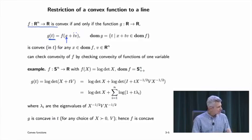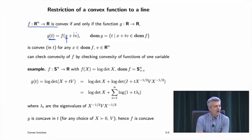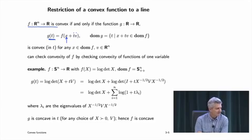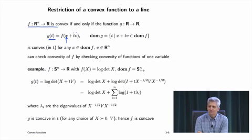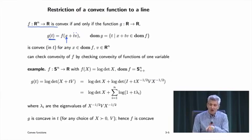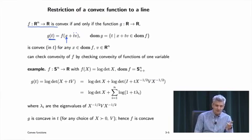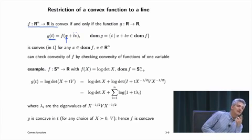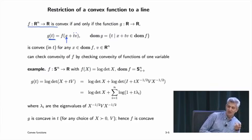How do you determine if a function from R to R is convex? You plot it, and you look with your eyeball. Does it curve up or down, or both? And if it curves up, then you say it's convex. What you do then is you back off and go to some other fancy method, like you differentiate it twice and prove some inequality.